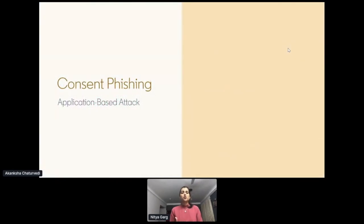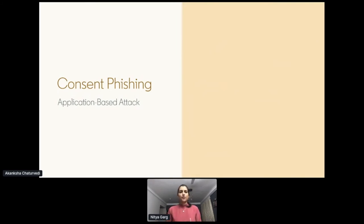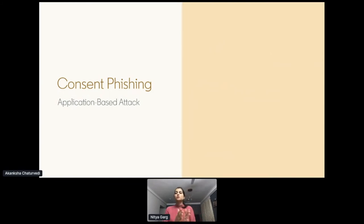Let's do a quick recap on OAuth access tokens. In very simple terms, a token is an arbitrary value that represents a web session — a session identifier for a web application. Tokens can be strings like 'abc123' or randomly generated IDs, but the main purpose is to help a server remember who somebody is. In this type of application-based attack, attackers try to trick the user into granting a malicious application access to sensitive data. Instead of stealing the user's password, attackers steal the access token and use it to access valuable data.